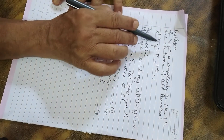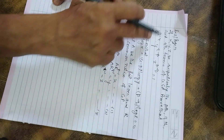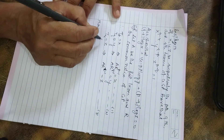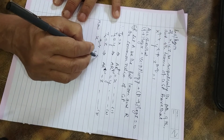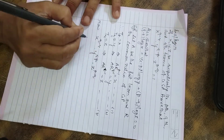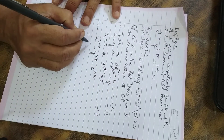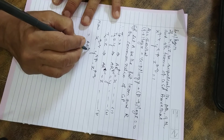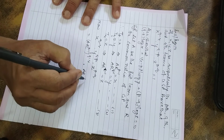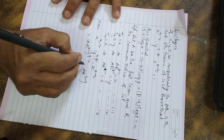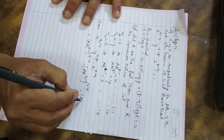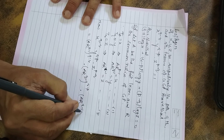Now we have to find X^(Q−R) · Y^(R−P) · Z^(P−Q). Take the left-hand side and substitute the values of X, Y, Z: [AR^(P−1)]^(Q−R) into [AR^(Q−1)]^(R−P) into [AR^(R−1)]^(P−Q). Separate this: A^(Q−R) into R^((P−1)(Q−R)) into A^(R−P) into R^((Q−1)(R−P)) into A^(P−Q) into R^((R−1)(P−Q)).